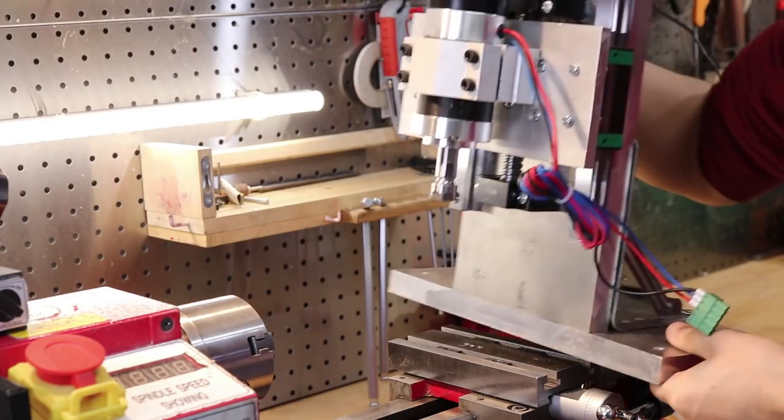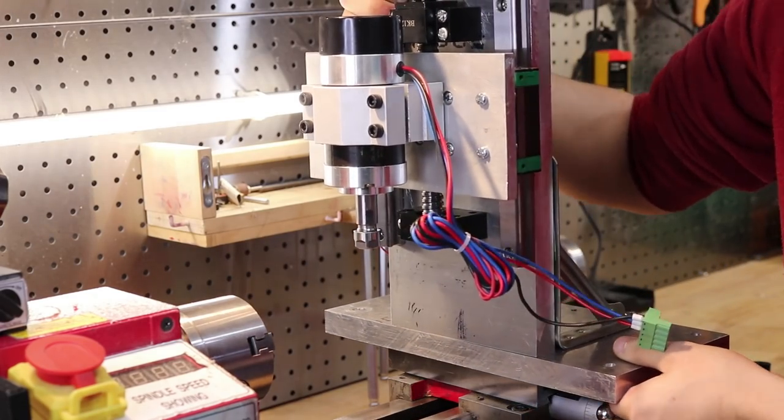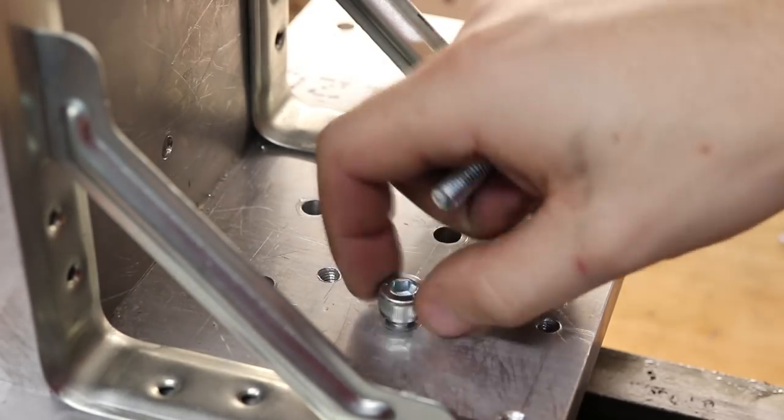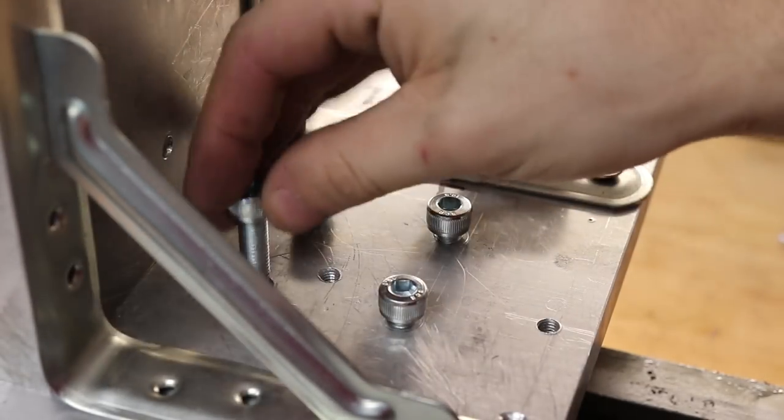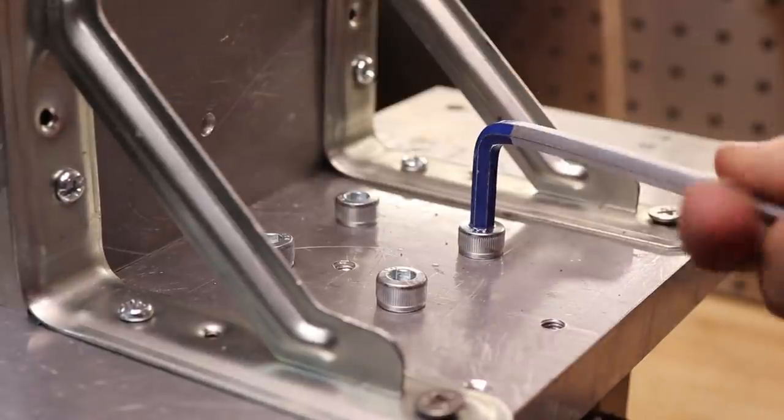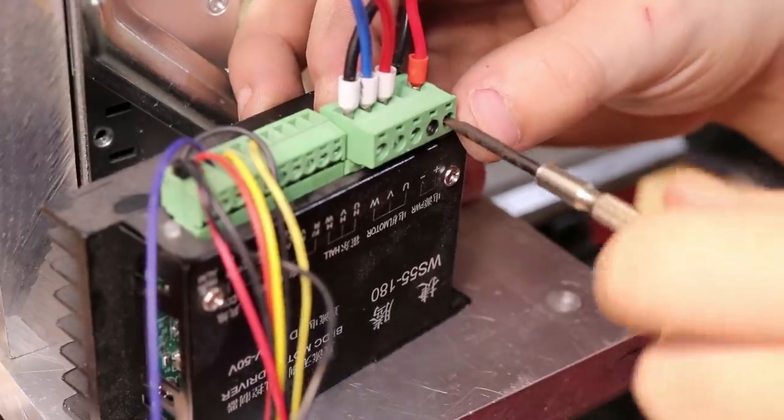We can now attach it to the lathe's cross slide. We'll also wire up the DC motor.